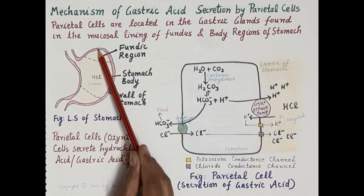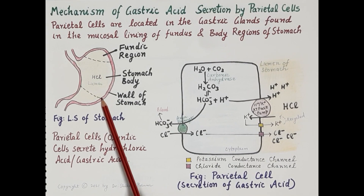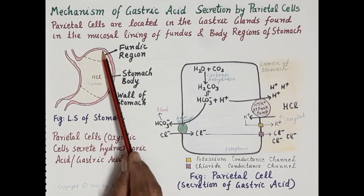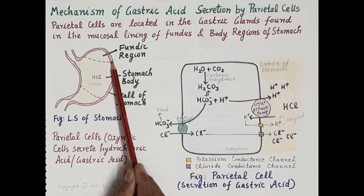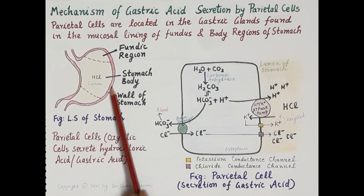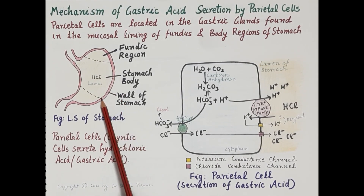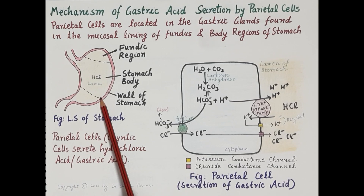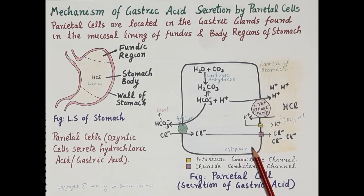These gastric glands are found in the mucosal lining of the fundus, which is the dome-shaped region of the stomach, and also in the mucosal lining of the body region of the stomach. The mucosal lining is the innermost lining of the wall of the stomach.